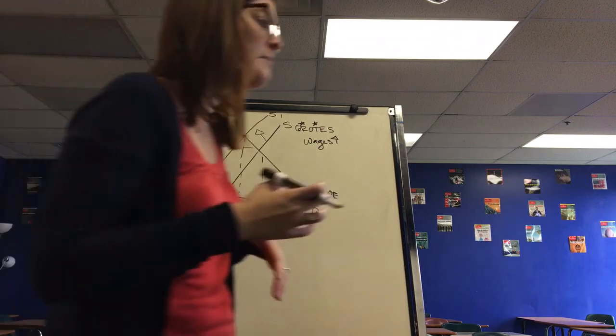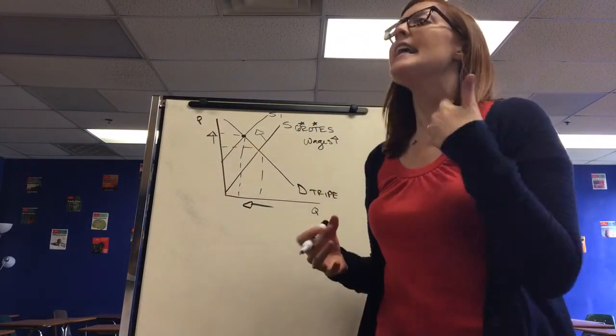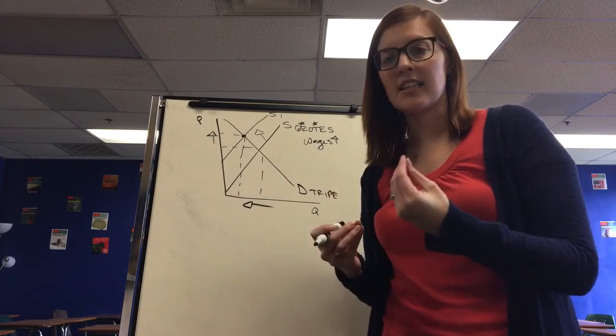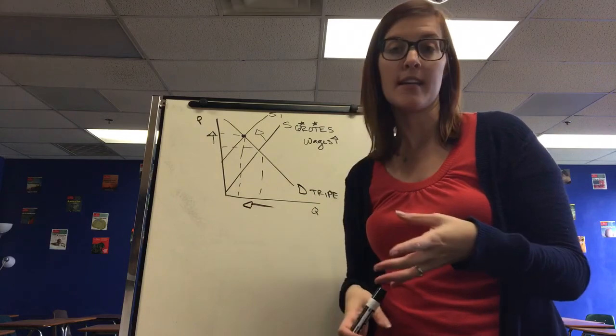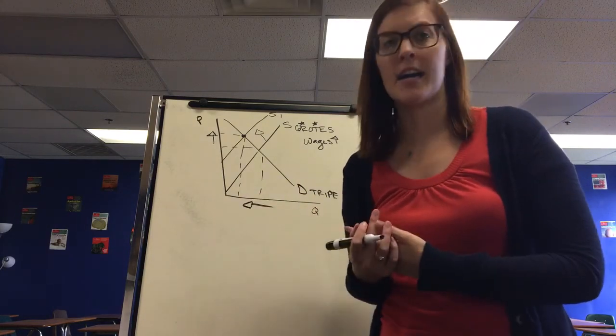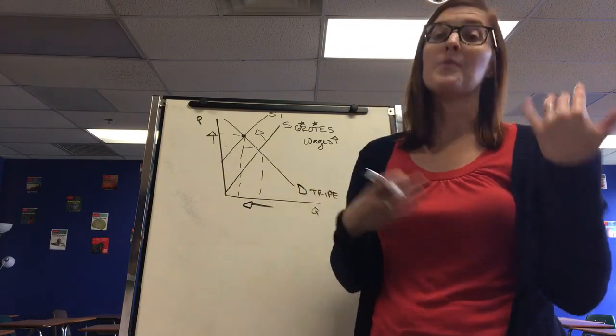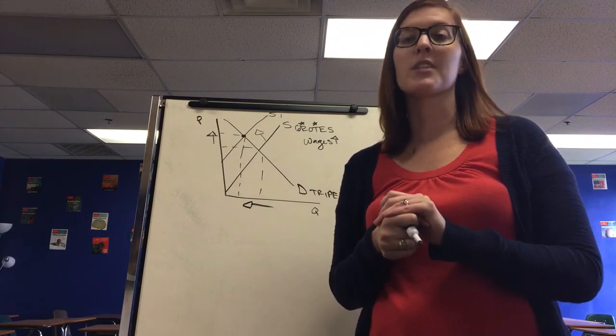One last thing is the term elasticity. We don't cover this in depth in macro, but just for the definition basis: inelastic goods are necessities, you are willing to pay any price for them. Oil and water are great examples. Elastic goods are luxuries - you will not pay a higher price for them. Things you want instead of things you need. And that concludes the Unit 1 AP Macroeconomics Review.